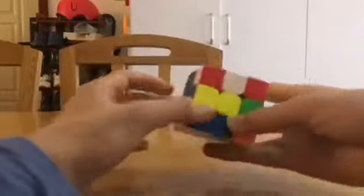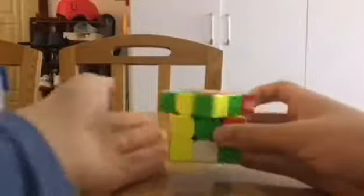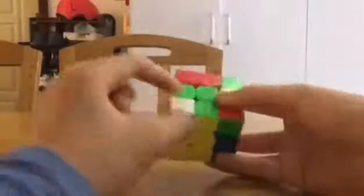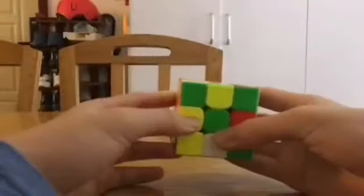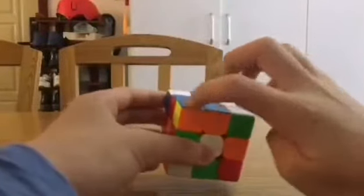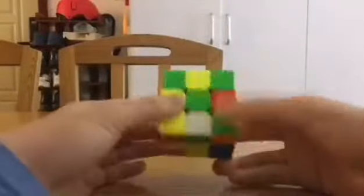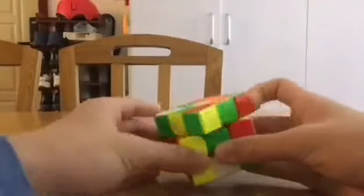His cross pieces are here, here, here, and here. You can solve these two pretty easily together, but he also noticed that this pair is not going to be disturbed when he does the cross solution.